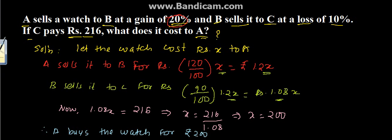Therefore we can write that A buys the watch for rupees 200. So the solution is: A buys the watch for 200. This is the solution for the problem, thank you.